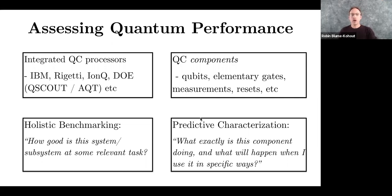So the way that we assess quantum performance is to look at all the different things that go into building a baby quantum computer, since that's all we have at this point. In part, we focus on quantum computing components - the individual qubits, the elementary gates, the measurements, the resets, the nitty gritty details. But at the same time, we look at the performance of integrated quantum computing processors like the testbeds from IBM Q, Rigetti, IonQ, Honeywell, and the Department of Energy QScout and AQT testbeds. All of the fully integrated multi-qubit processors that are popping up can be treated as quantum computers, just really small ones.